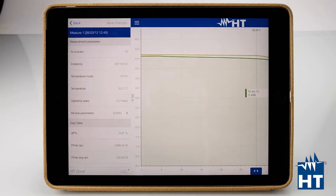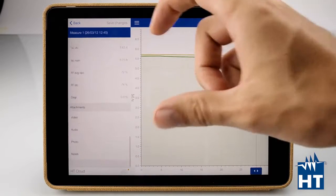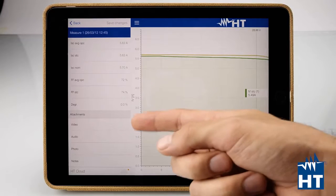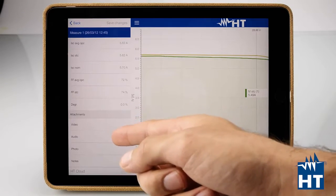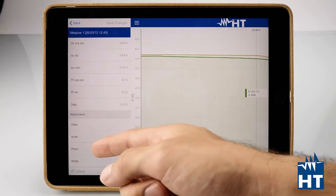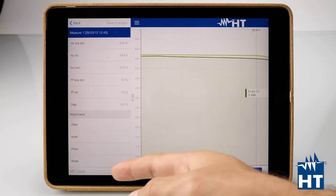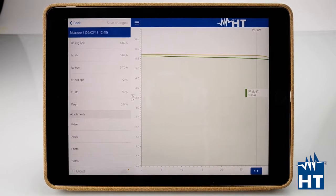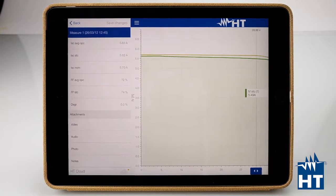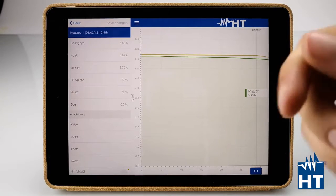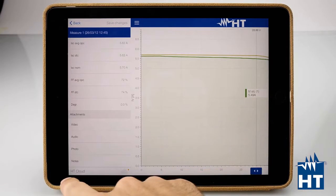One of the most important parts of this app is that you can attach a video, record a vocal comment, attach a photo, or write a text note. Each text note, each video, each audio recording, each photo is available on your PC after you've uploaded everything on HT Cloud.